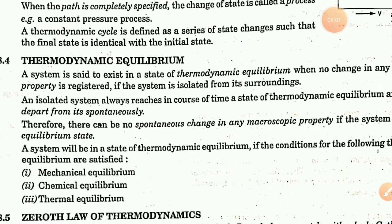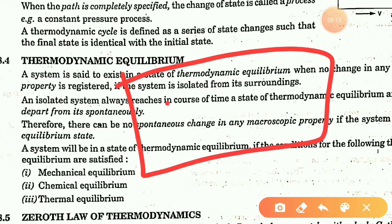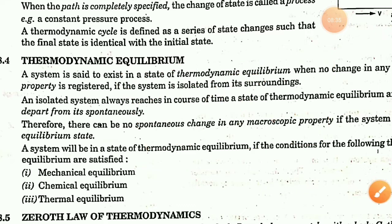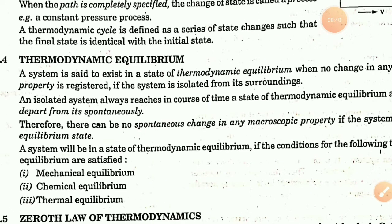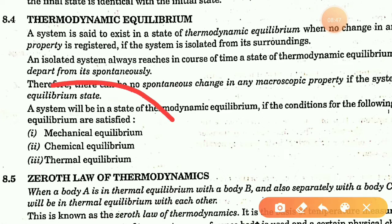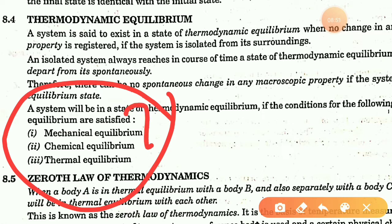Thermodynamic equilibrium: if a system is in thermodynamic equilibrium, any change occurs infinitesimally slowly and passes through equilibrium states smoothly. If a spontaneous movement occurs, the system is not in equilibrium. For thermodynamic equilibrium, three conditions must be satisfied: mechanical equilibrium, chemical equilibrium, and thermal equilibrium.